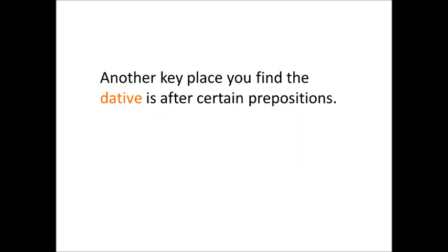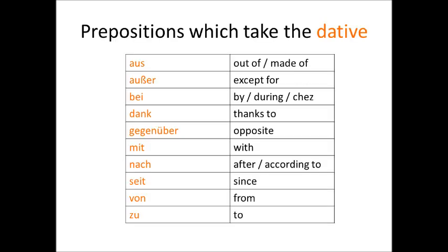Another key place where you use the dative is after certain prepositions. This means that the noun or pronoun after your preposition takes the dative, as do any accompanying adjectives. The prepositions used either only or mainly with the dative are: aus, which means out of or made of depending on the context; außer, which means except or except for; bei, which doesn't translate simply into English but is generally to do with location and can mean by, at, during, or chez — like the French chez moi; and dank, which means thanks to, and which is sometimes used with the genitive instead of the dative, particularly when referring to plurals.